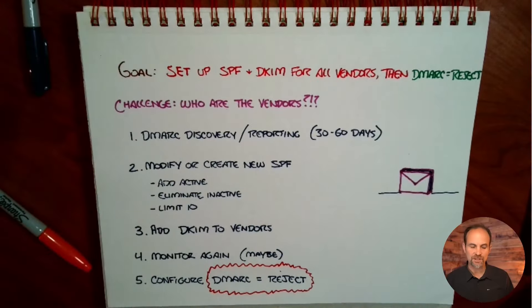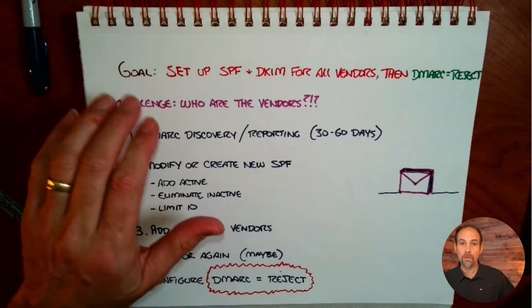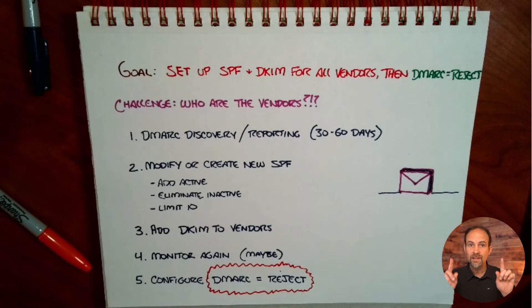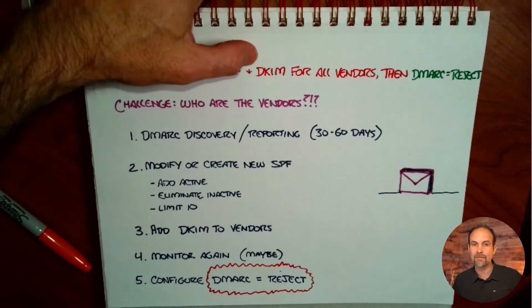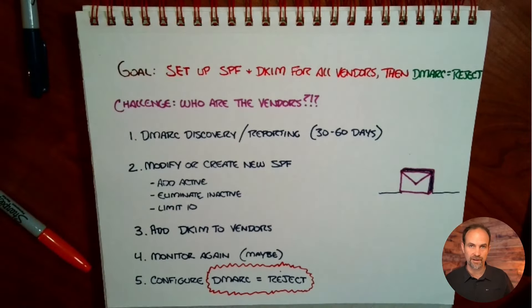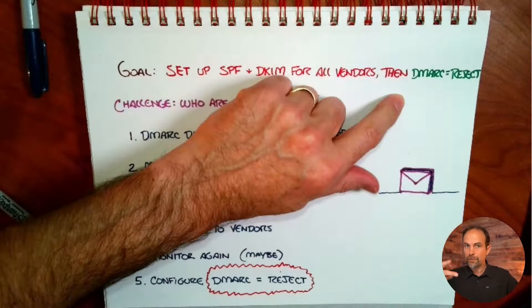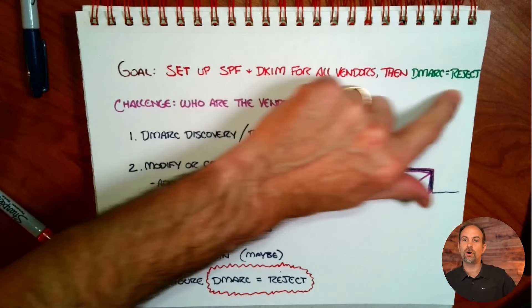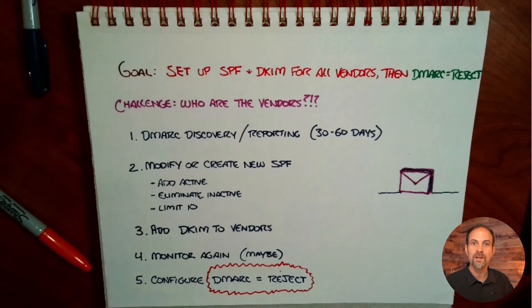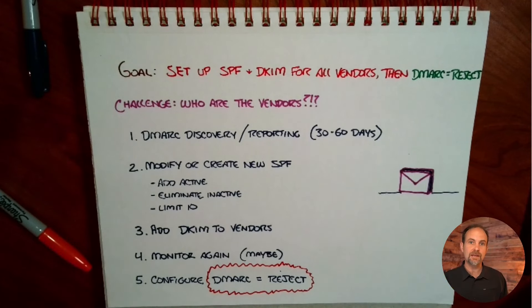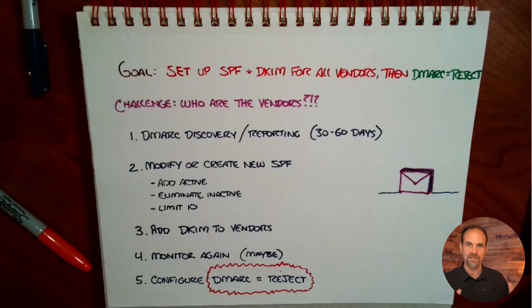Let me walk through this process with you. Big picture, the goal is simple — keep your eye on the prize. We need to set up SPF and DKIM for all of our vendors, then flip DMARC over to reject, to eliminate any other source of sending emails on behalf of our domain. That's the whole goal of DMARC: stop phishing, stop impersonation.